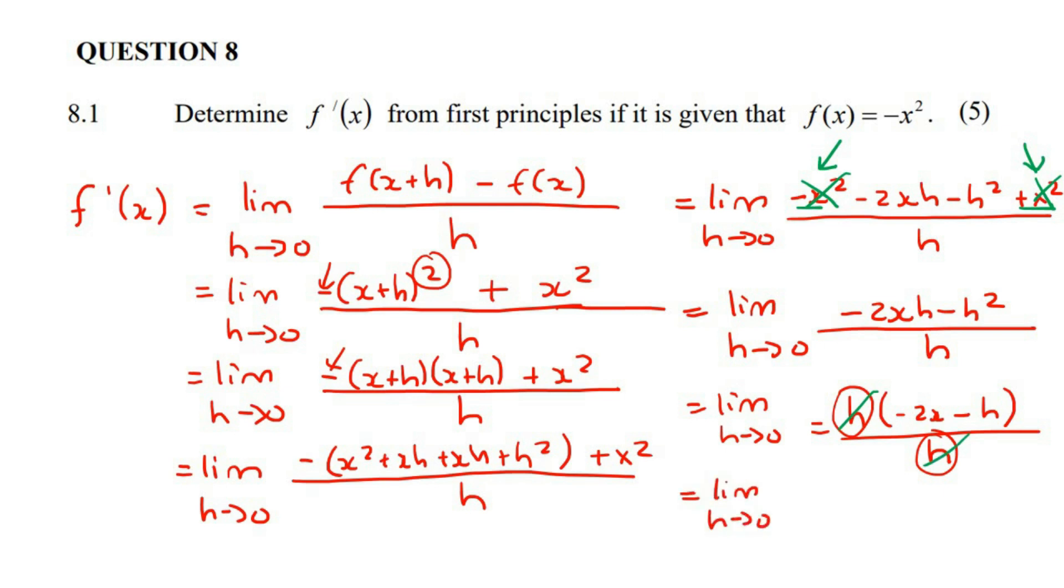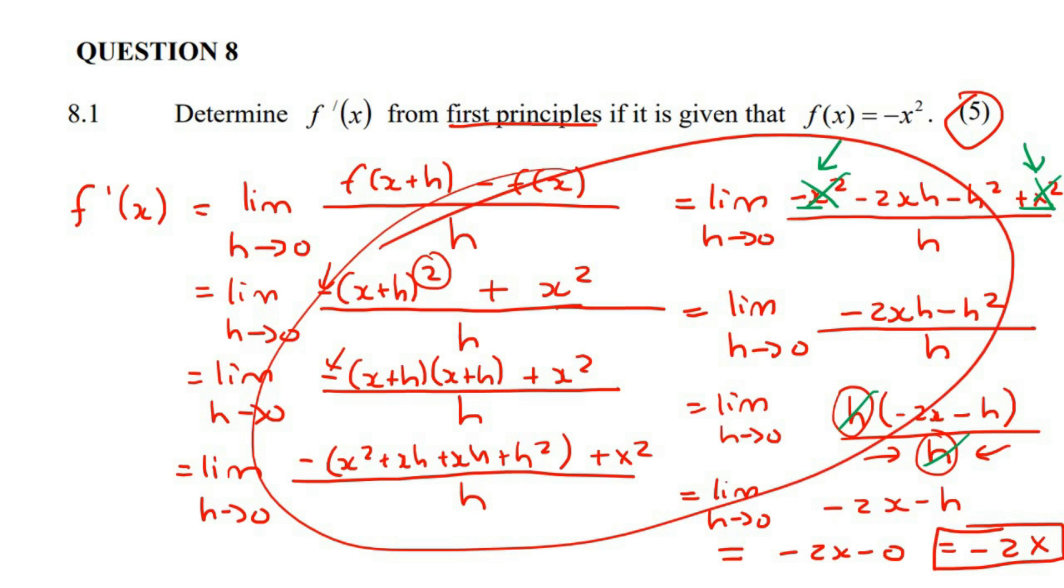Limit h goes to zero. And so now it just gives us negative 2x take away h. At this step, you can let h become zero. Kevin, why can't we let h become zero in these steps? Because you have an h at the bottom, and you're never allowed to have a zero at the bottom. But now you've canceled out the h that's at the bottom. And so you can. You can now just say equals, and then we're going to let the h become zero. And that's going to give us negative 2x. And that is the final answer. If you did this using the Fost method of taking the first derivative, you also get negative 2x. But because they said first principles, and it's for five marks, you have to go do this long method.